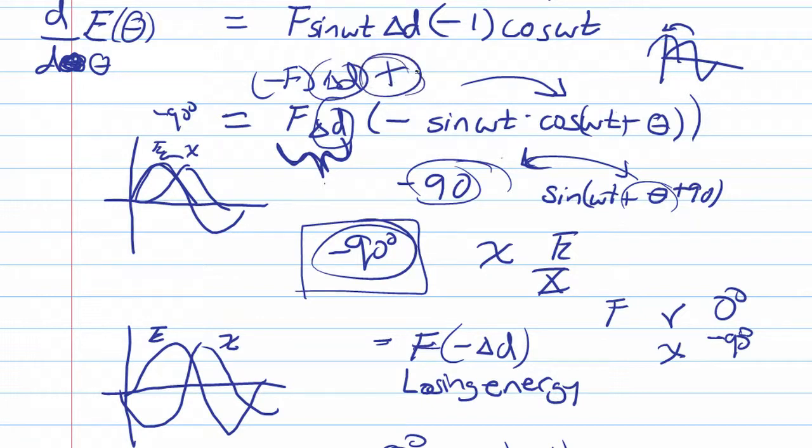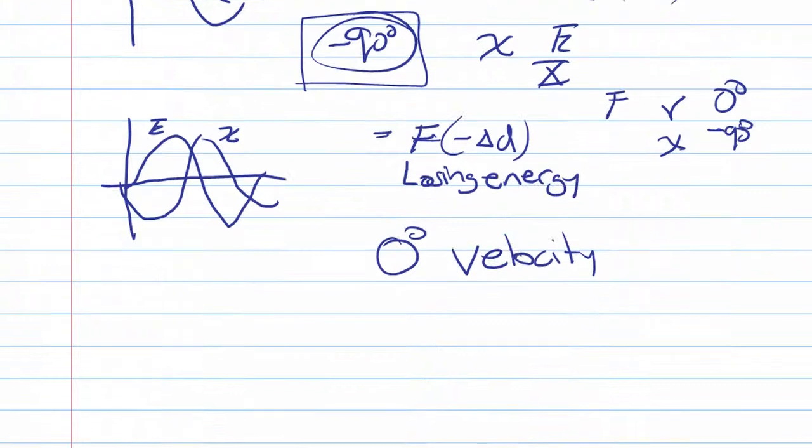So this is why we have this positive number. We have the zero velocity describing the - zero phase velocity describing the resonance condition.